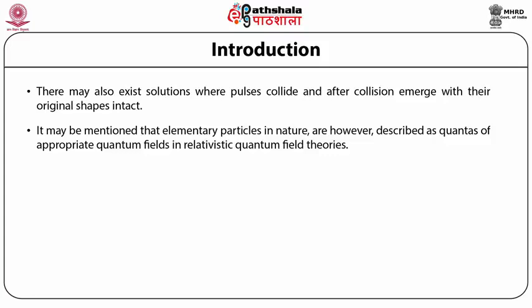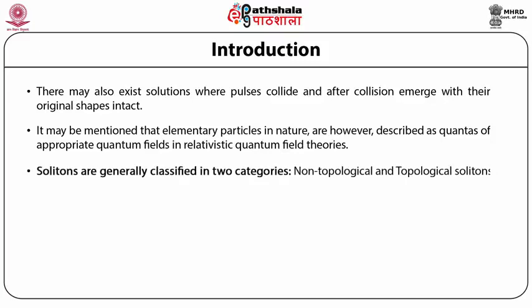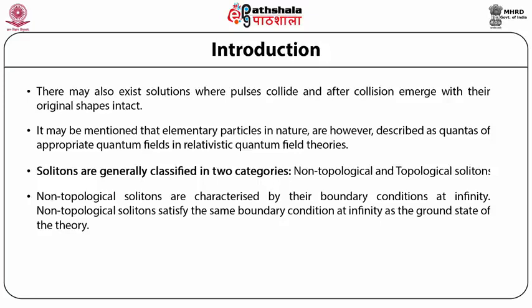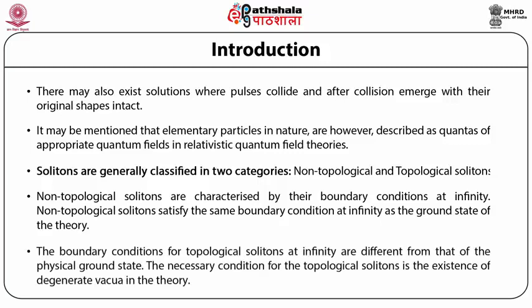It may be mentioned that elementary particles in nature are described as quanta of appropriate quantum fields in relativistic quantum field theories. Solitons are generally classified in two categories: non-topological and topological solitons. Non-topological solitons are characterized by boundary conditions at infinity and satisfy the same boundary conditions as the ground state of the theory. The boundary conditions for topological solitons at infinity are different from that of the physical ground state. The necessary condition for topological solitons is the existence of degenerate vacua in the theory.